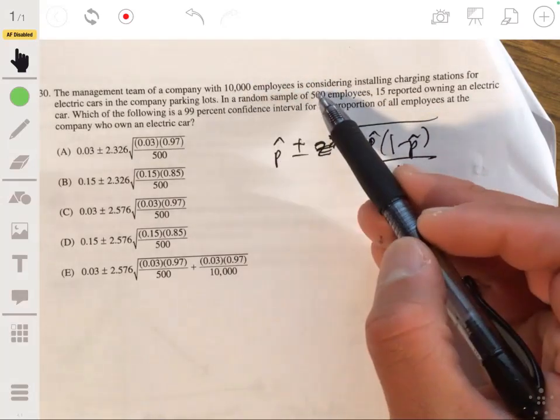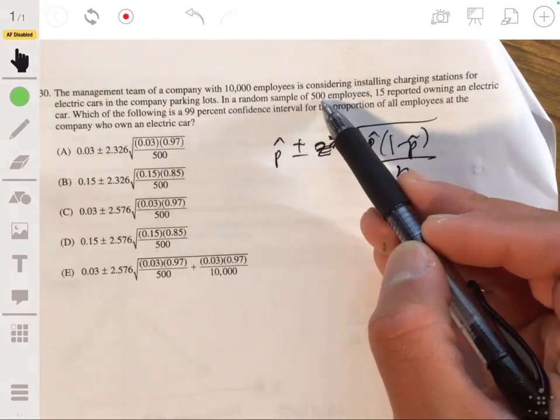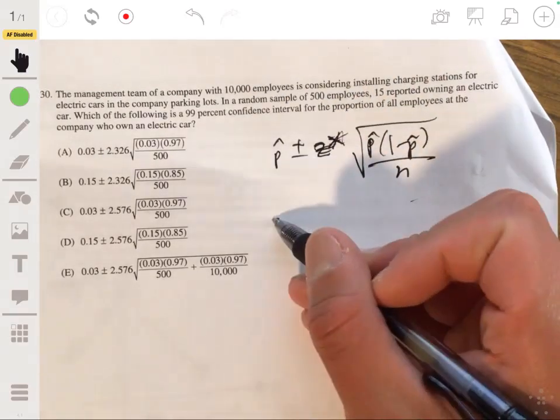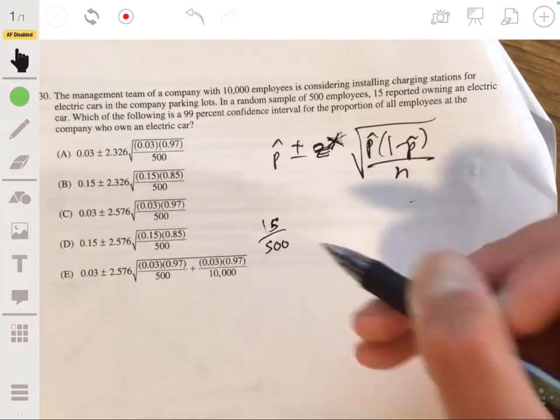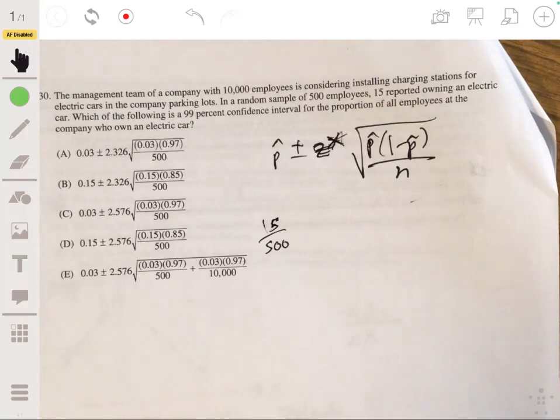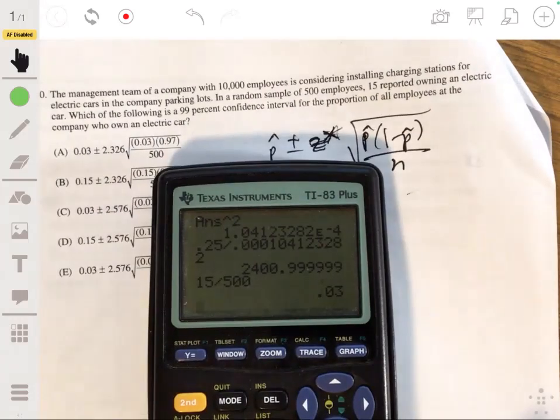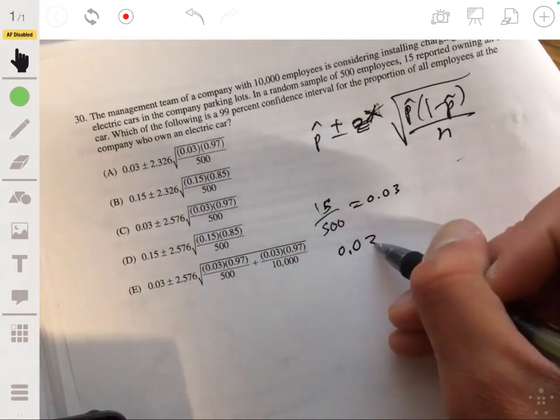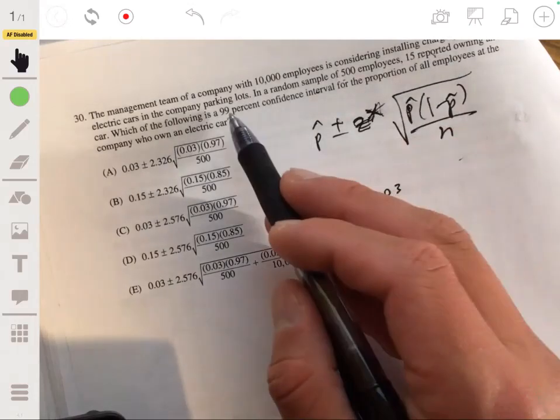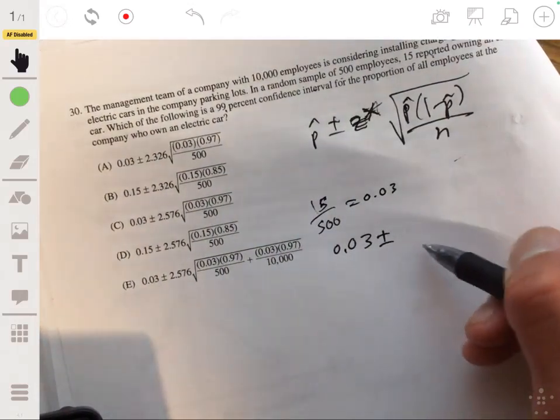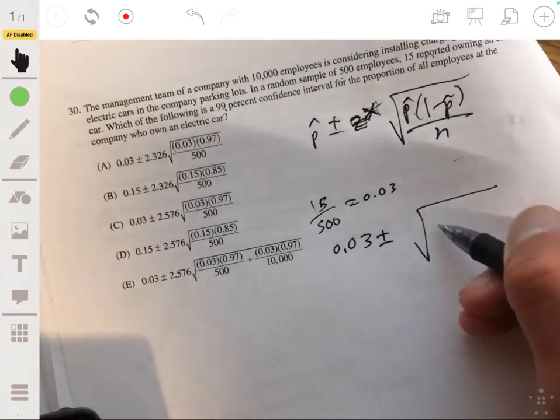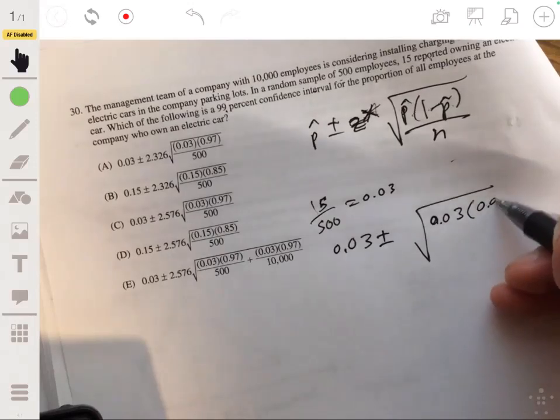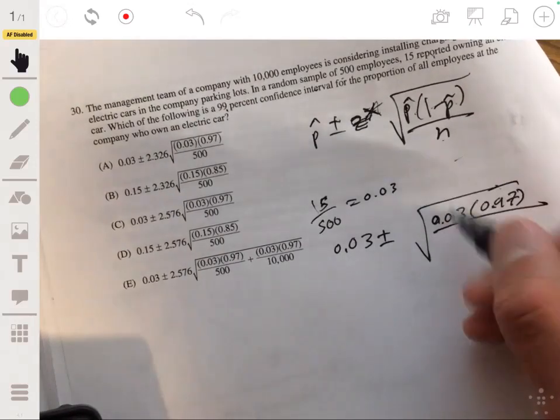We just got to figure out what all these are. So the sample proportion is, the N is 500. 15 out of 500 is going to be your P hat. So you have 15 out of 500. And I think that's 3%. Yeah. 0.03. So your P hat is 0.03. So you're going to have 0.03 plus or minus 99% confidence interval. Well, first, let me just put the 0.03. 0.03. And here, 1 minus 0.03 would be 0.97 over 500.